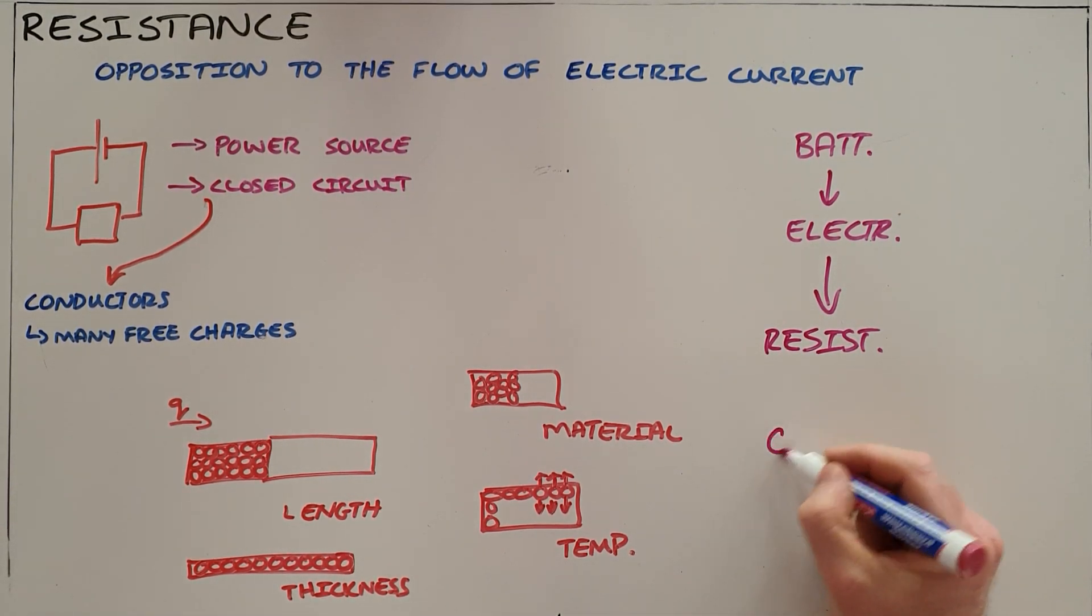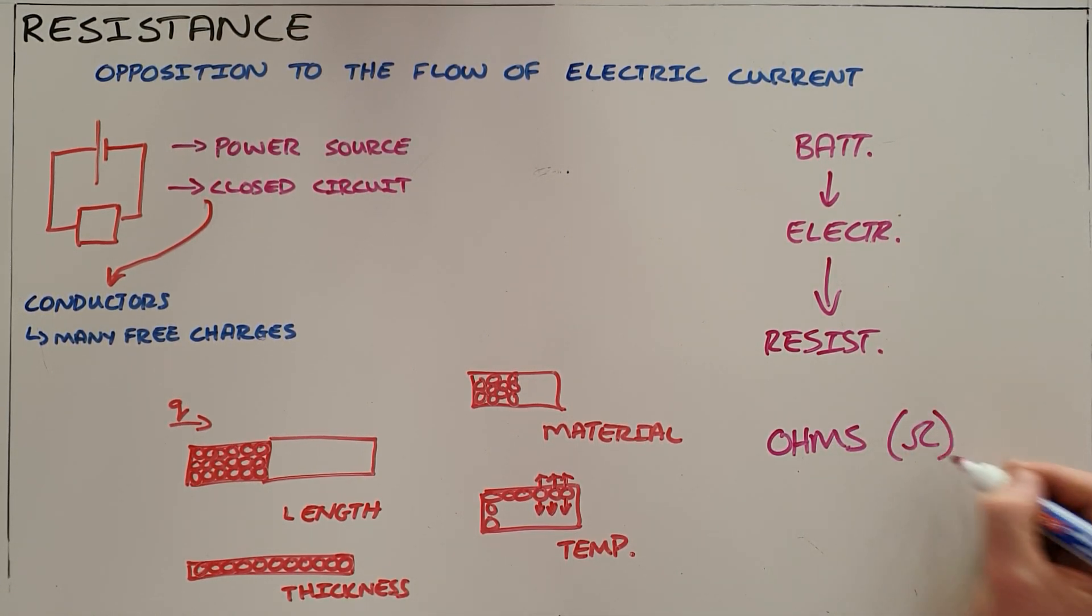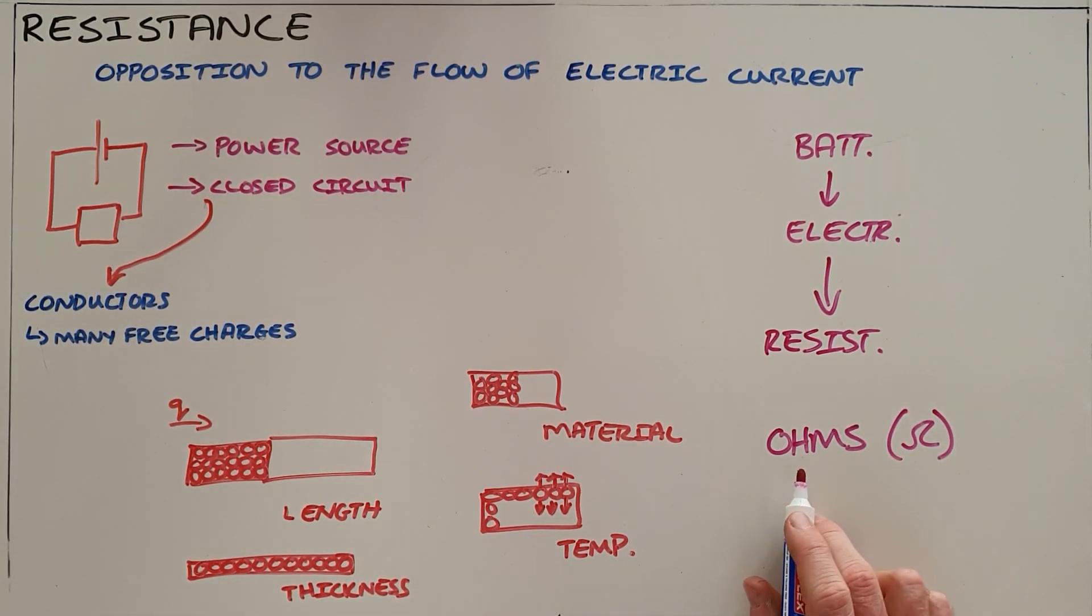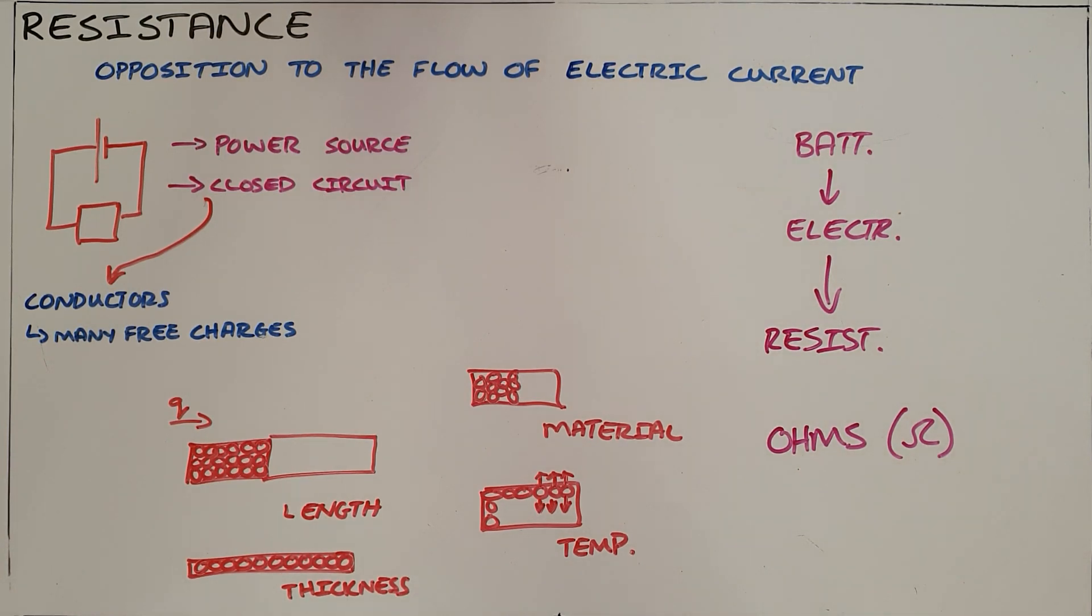Finally, resistance is measured in ohms with the symbol omega. Essentially the resistance tells us how much energy is being used up in order to pass through that specific resistor.